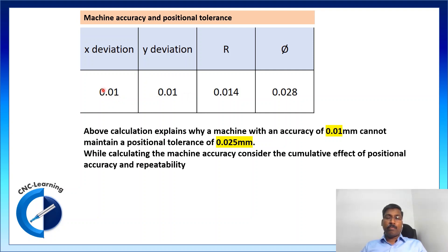So, if we calculate the possible diametrical deviation will be 0.028, that is 28 microns.